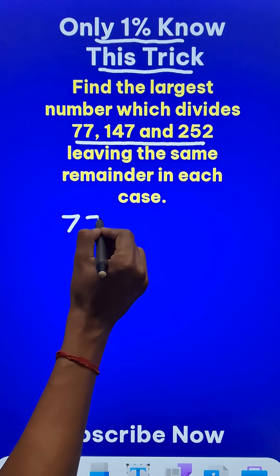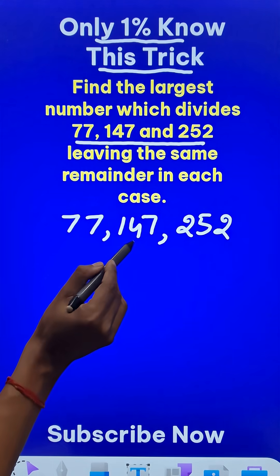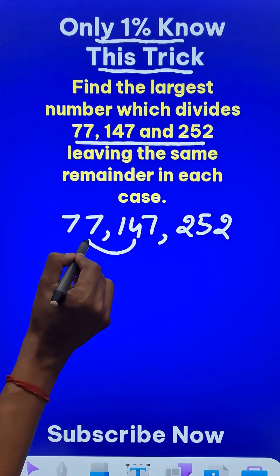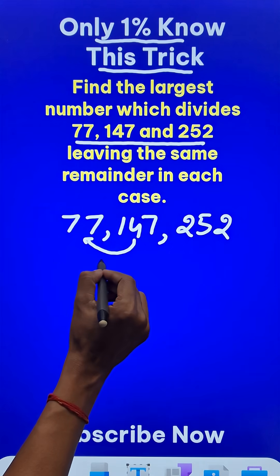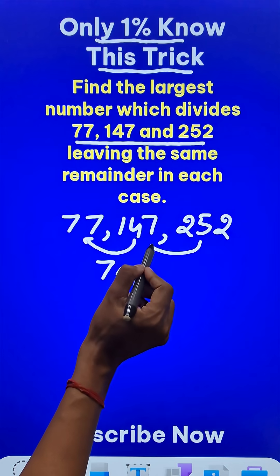First take the three numbers and consider them in pairs like these two numbers. The difference between 147 and 77 is 70, and likewise you have to find the difference between the other two pairs as well.